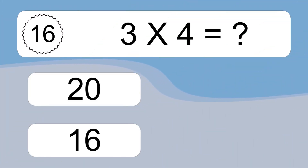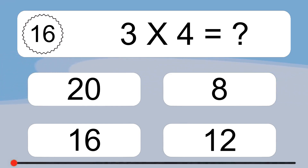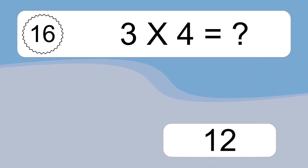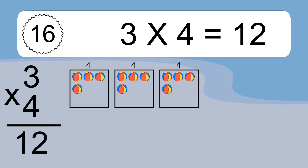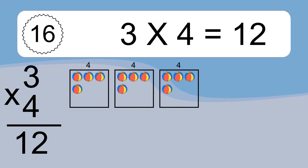3 times 4 equals what? 3 times 4 equals 12. We have 3 boxes and each box has 4 colorful balls inside. If you count all the balls in all the boxes together, you will have 3 times 4 balls. This equals 12 balls.